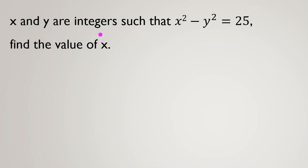x and y are integers such that x² - y² = 25. Find the value of x. Here it's important that they are integers. If they were real numbers, we couldn't solve this.